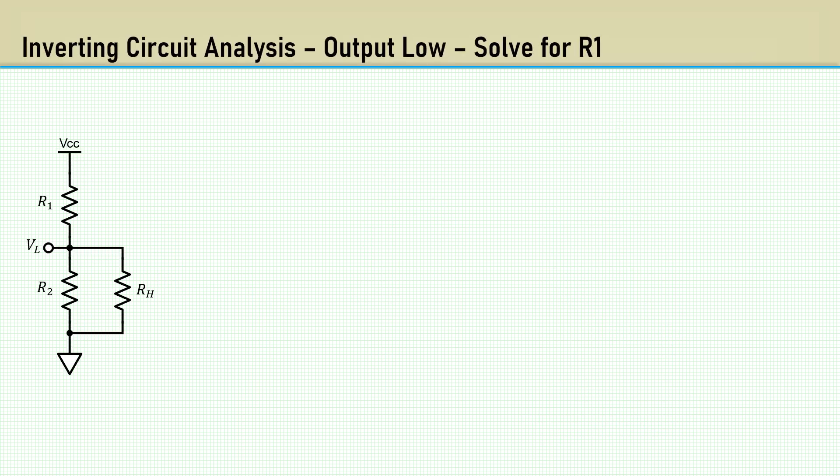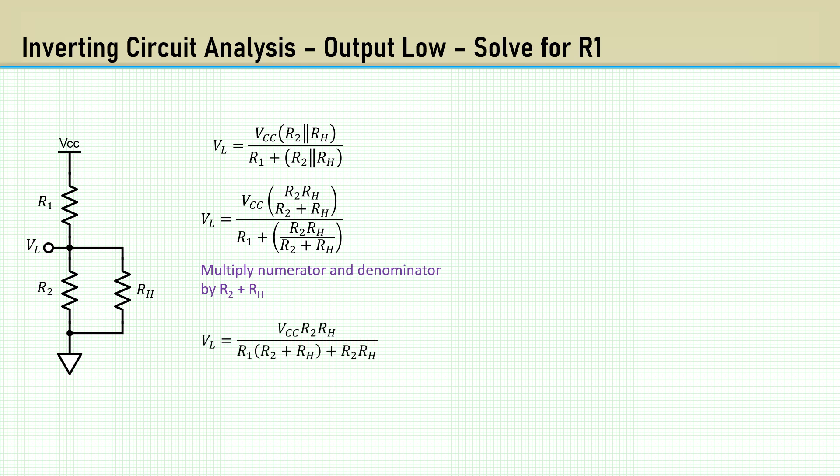When the output is low, RH is connected to ground, so VL is the voltage divider with R1 and the parallel combination of RH and R2. Eliminate the fraction by multiplying by R2 plus RH, then distribute.